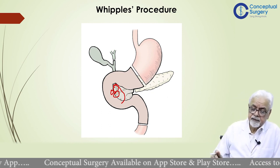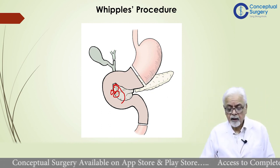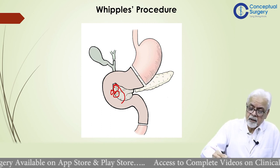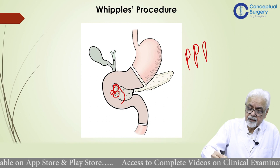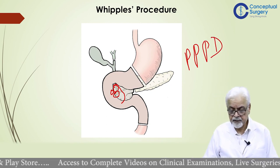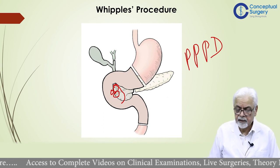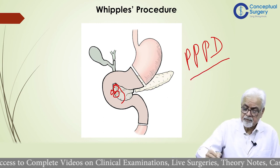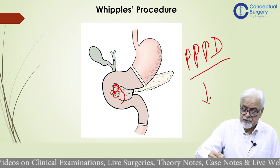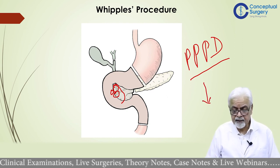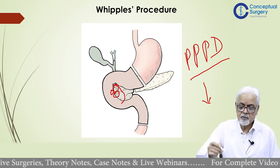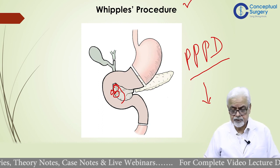Whenever there is a lesion here, the procedure would be either Whipple's pancreaticoduodenectomy or pylorus-preserving pancreaticoduodenectomy. Pylorus-preserving pancreaticoduodenectomy is done by specialized people who have greater volume and is done for lesions which are generally peri-ampullary. For by and large pancreatic head lesions, the common procedure is Whipple's procedure.